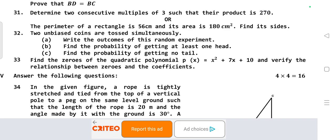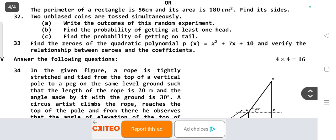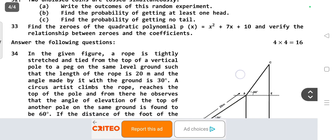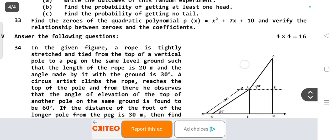Two unbiased coins are tossed simultaneously. Write the outcomes of this random experiment. Find the probability of getting at least one head. Find the probability of getting no tail. Find the zeros of the quadratic polynomial p(x) = x² + 7x + 10 and verify the relationship between zeros and coefficients.